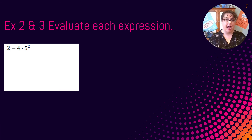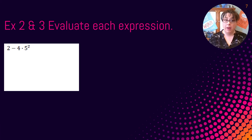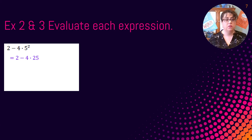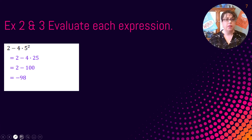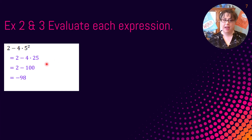Now that we understand how exponents work, let's put them into a problem where order of operations matters. We have 2 minus 4 times 5 squared. Order of operations says do exponents first: 5 squared is 25. Then do multiplication: 4 times 25 is 100. Then 2 minus 100 is negative 98. If you need to use a calculator, that's fine for everything except the exponents — I really want you to do those by hand and show each step.